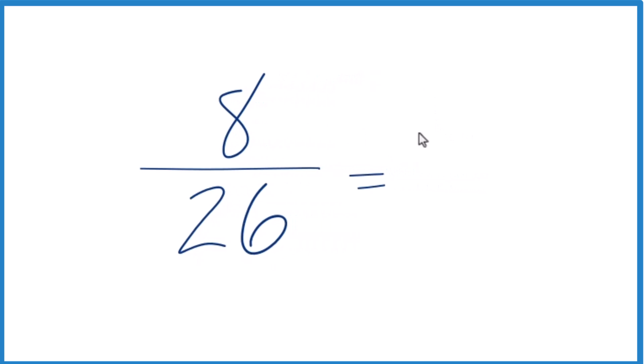8 divided by 2 is 4, and then 26 divided by 2, that's 13. And we can't simplify this any further. We can't reduce this any further.